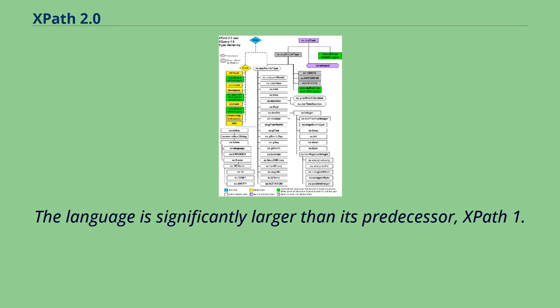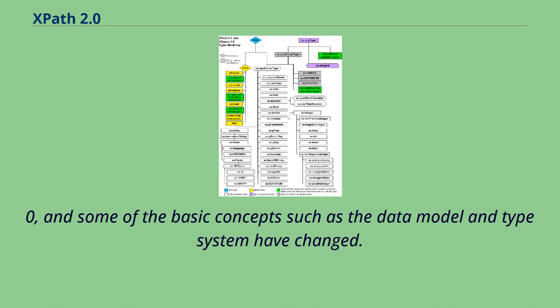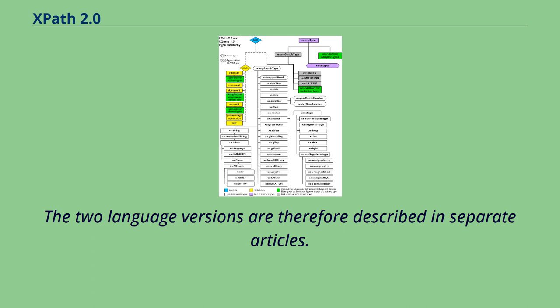The language is significantly larger than its predecessor, XPath 1.0, and some of the basic concepts such as the data model and type system have changed. The two language versions are therefore described in separate articles.